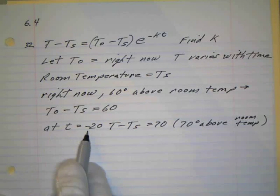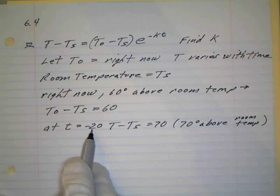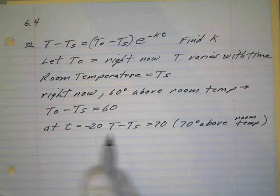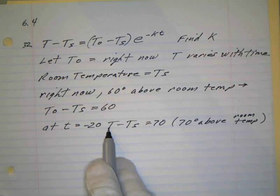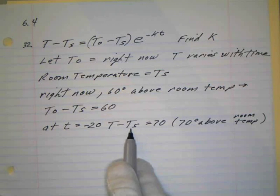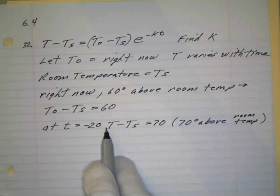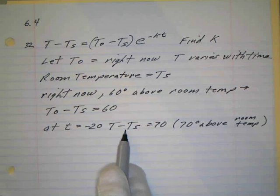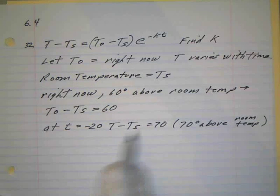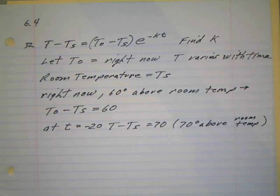So it says that at t minus 20, then the temperature of our ingot was 70 degrees above the temperature of the room. So the difference would be 70 degrees, 70 degrees above the room temperature. So that works out pretty good right there. So actually we have the numbers in our formula all set up ready to go, based upon the information they gave us.